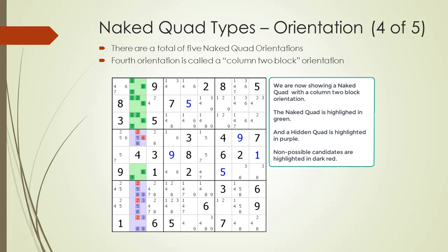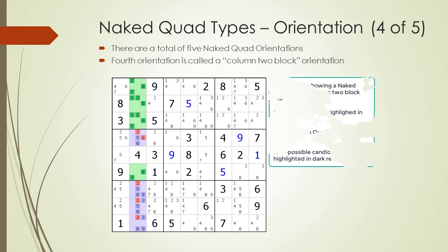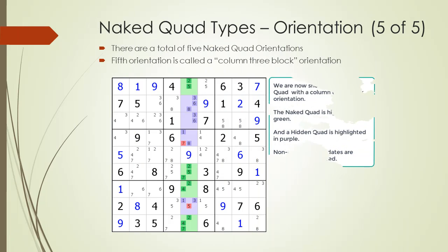The fourth orientation is when we have a naked quad in a column, but the 4 cells making up the quad are occurring in 2 different blocks as shown. In this example, we have 3 cells in block 1 and 1 cell in block 4. The fifth and last orientation is when we have a naked quad in a column, but the 4 cells are occurring in 3 different blocks as shown — 1 cell in block 2, 1 cell in block 5, and 2 cells in block 8.